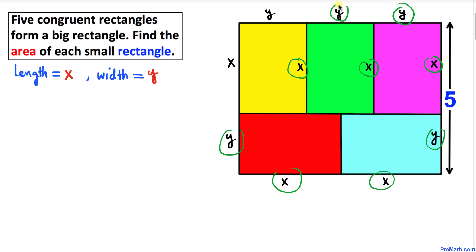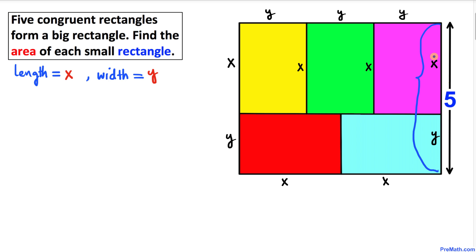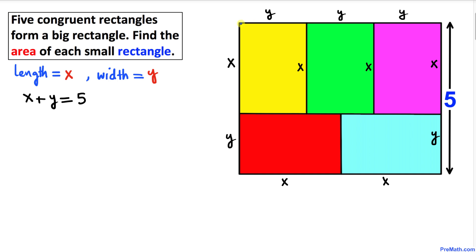Now let's focus on the width of this big rectangle. This width is equal to x plus y, and this is also equal to five. So therefore I can write this as x plus y equals five.